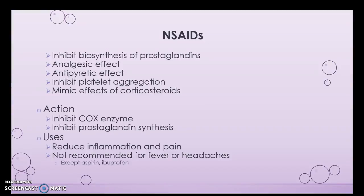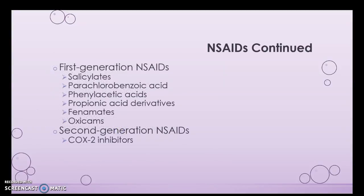The uses are to reduce inflammation and pain. You'll notice most NSAIDs are not recommended for fever or headaches, except for aspirin or ibuprofen — both of those do work for fevers. You have first generation NSAIDs, all of which are nonspecific. When you do your drug cards under classification, list these under first generation NSAIDs with a parenthesis for specifics, such as salicylates. We also have a second generation NSAID, which is the COX-2 inhibitor.